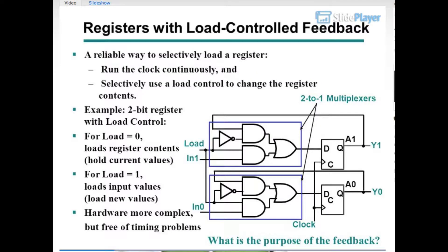Registers with load-controlled feedback provide a reliable way to selectively load a register. Run the clock continuously and selectively use a load control to change the register contents. Example: a 2-bit register with load control. For Load equals 0, hold current values. For Load equals 1, load new input values. Hardware is more complex, but free of timing problems. This uses 2-to-1 multiplexers, with inputs A1, A0, load signal, and clock.